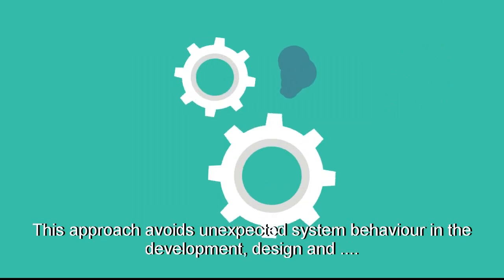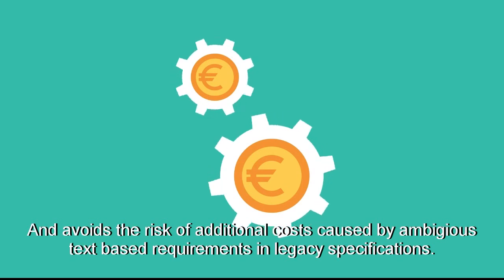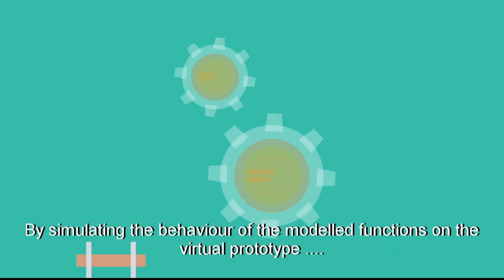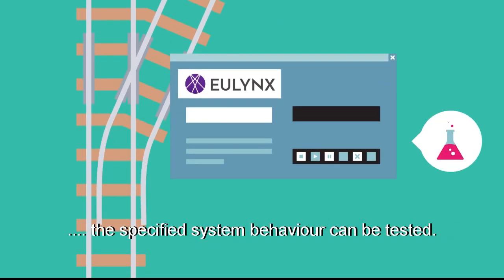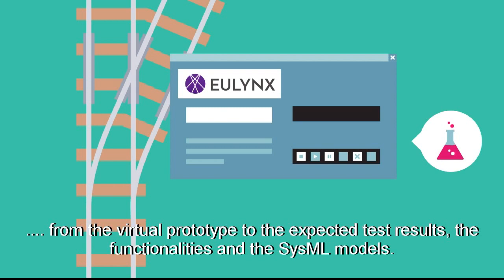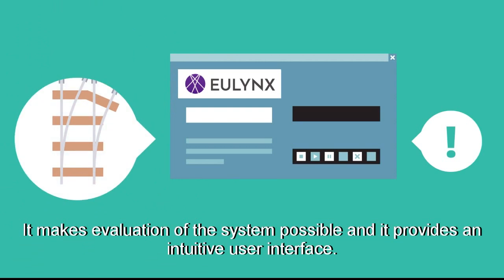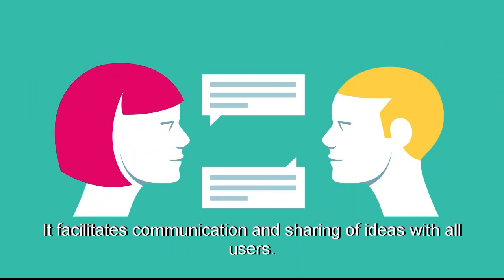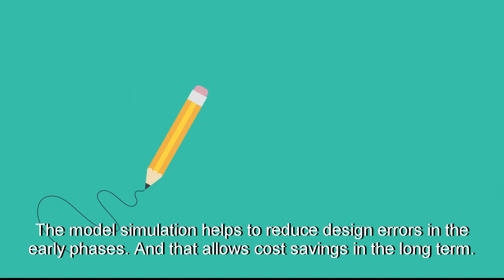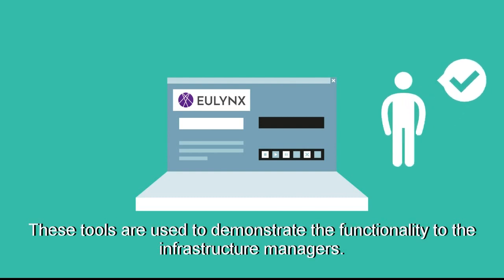This approach avoids unexpected system behaviour in the development, design and probably also in the later phases of the system lifecycle, and avoids the risk of additional costs caused by ambiguous text-based requirements in legacy specifications. By simulating the behaviour of the modelled functions on the virtual prototype, the specified system behaviour can be tested. The results of the model simulation make it possible to compare the resulting reactions from the virtual prototype to the expected test results, the functionalities and the SysML models. This method makes the system comprehensible, enables evaluation of the system, and provides an intuitive user interface. It facilitates communication and sharing of ideas with all users. The model simulation helps to reduce design errors in the early phases, allowing cost savings in the long term, and also enables early automated verification and validation of the system functions. These tools are used to demonstrate the functionality to the infrastructure managers.